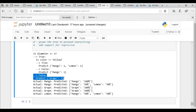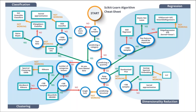Let me show you the scikit-learn algorithm cheat sheet, which explains which algorithm to use and when — itself built in a decision tree format. First, check if you have more than 50 samples; if not, collect more data. If yes, decide whether you want to predict a category: if yes and you have labeled data, it's a classification problem; if no labeled data, it's clustering. If you don't want to predict a category but a quantity, it's a regression problem. Otherwise, consider dimensionality reduction.